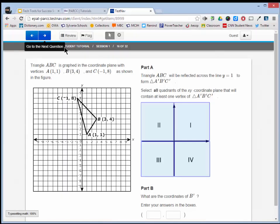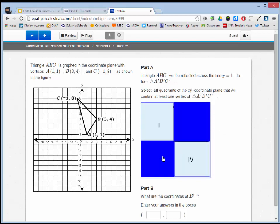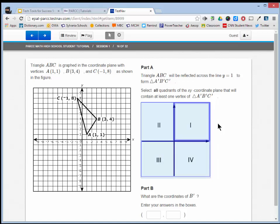Moving ahead to item 16, you can see how this can be done by simply clicking on regions of the graph. Click on the region of the graph again to turn off the selection if you have incorrectly selected an item. Hot spot items are relatively simple and can be mastered in no time.